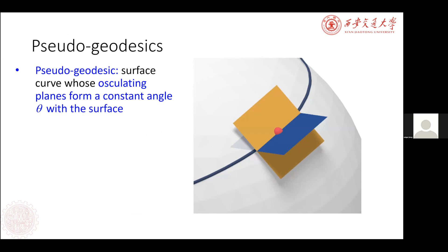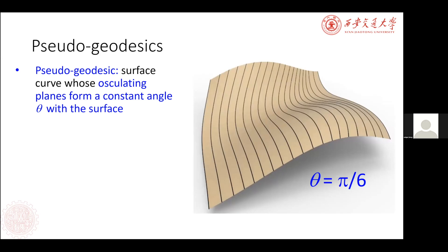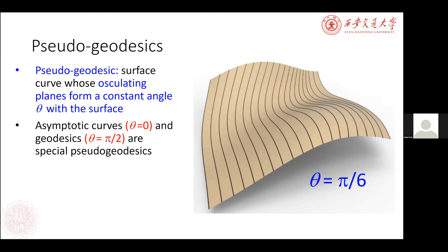To design and compute a pleated structure, we introduce the concept of pseudo-geodesics. A pseudo-geodesic is a surface curve whose osculating plane forms a constant angle with the tangent plane. The constant angle is theta. There are two special cases: when theta equals zero, the pseudo-geodesic curve is an asymptotic curve; when theta equals π/2, it is a geodesic. Usually a pseudo-geodesic has a constant angle in between.